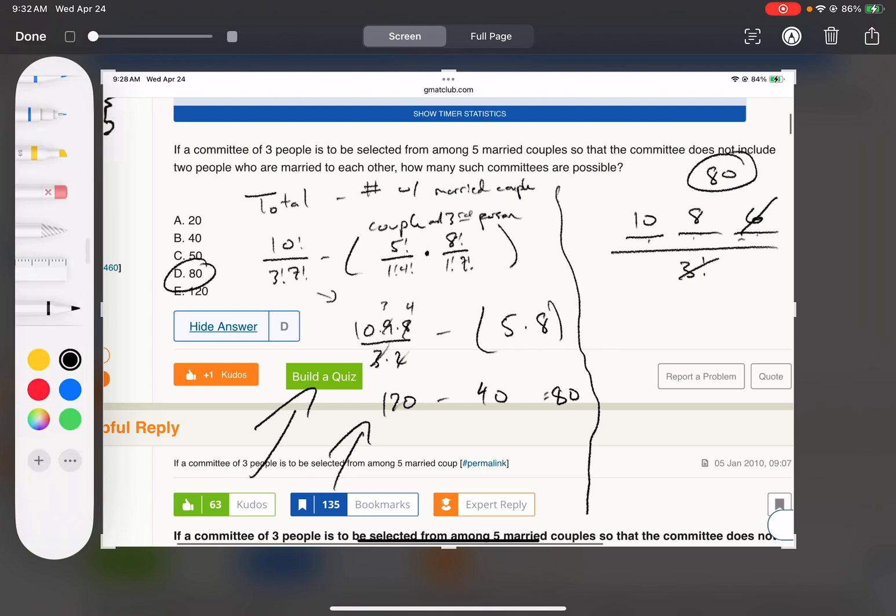Like if we're making a committee of 4 - and we still didn't want a married couple - it'd be 10, 8, 6, 4, divided by 4 factorial. All right.